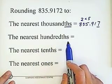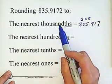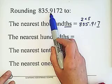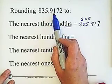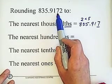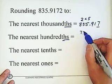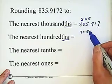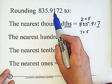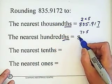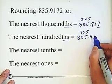The nearest hundredth: the second digit on the right side of the decimal point, which is 1. Look at the right side — 7 is greater than 5. So because 7 is greater than 5, we need to round up: add 1 to the rounding digit. The answer is 835.92.